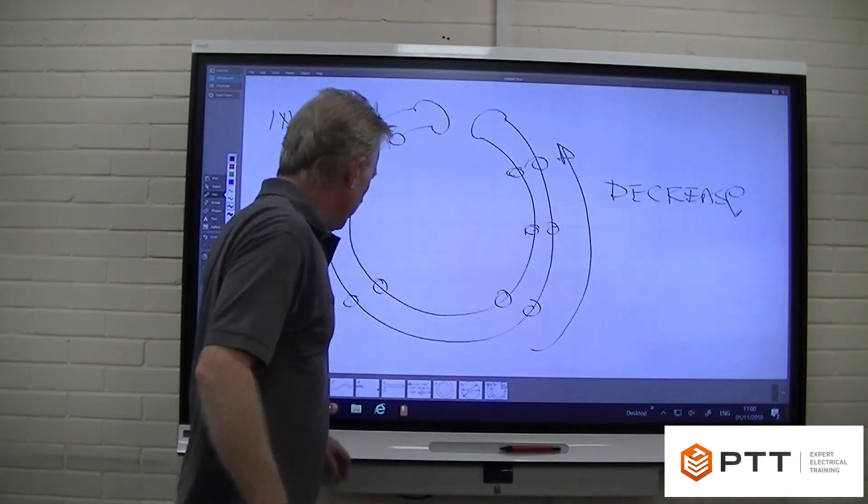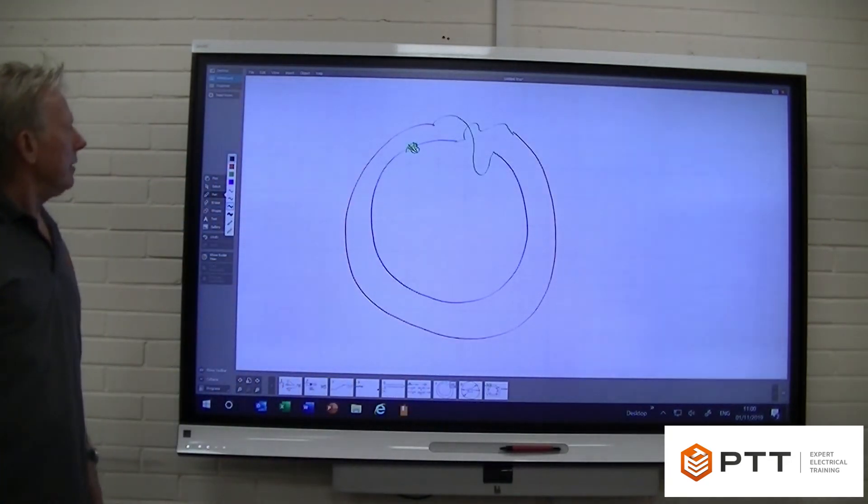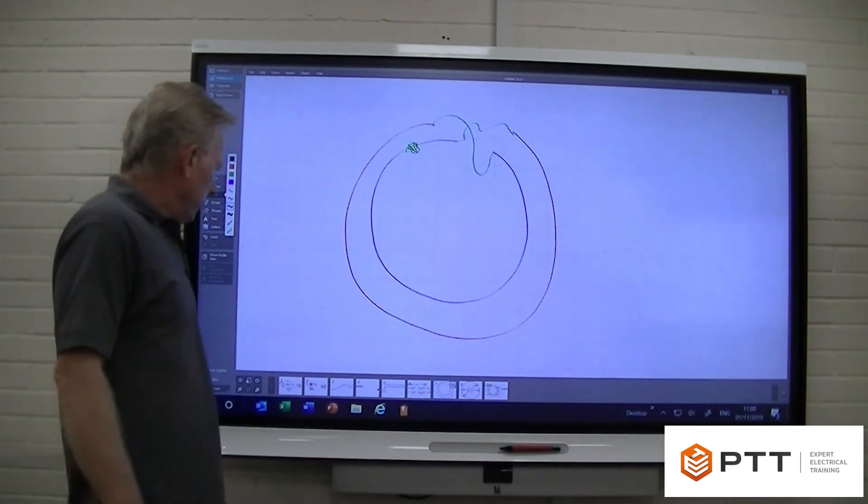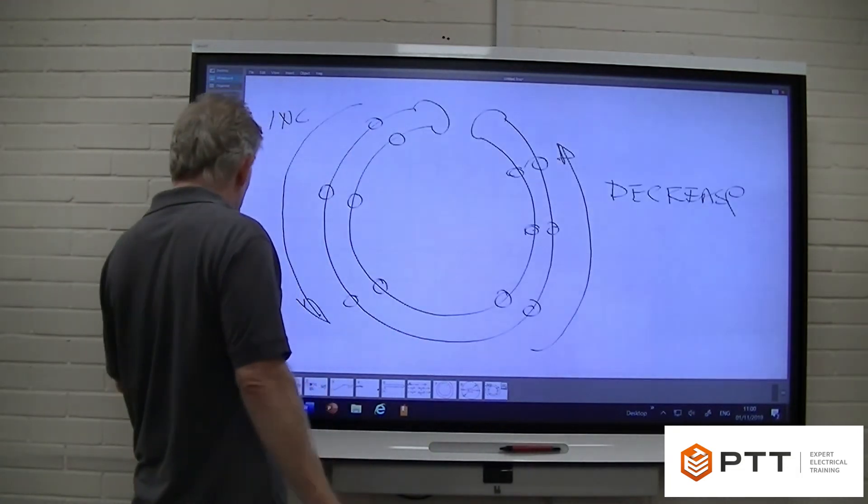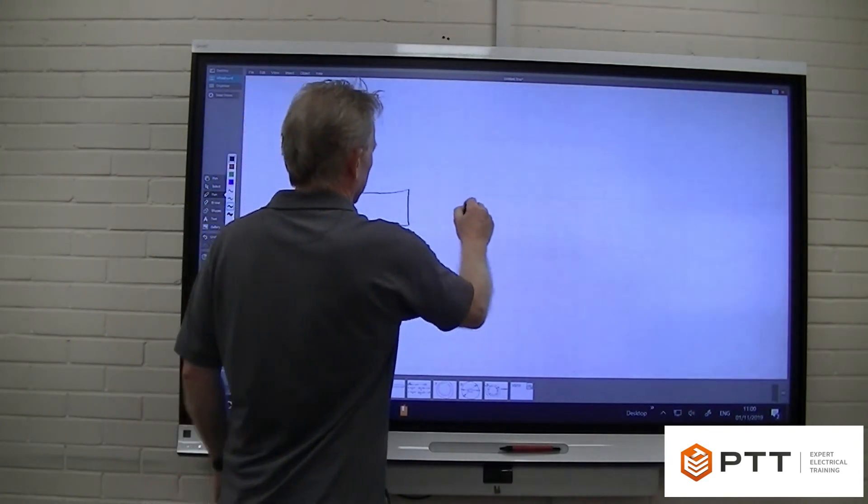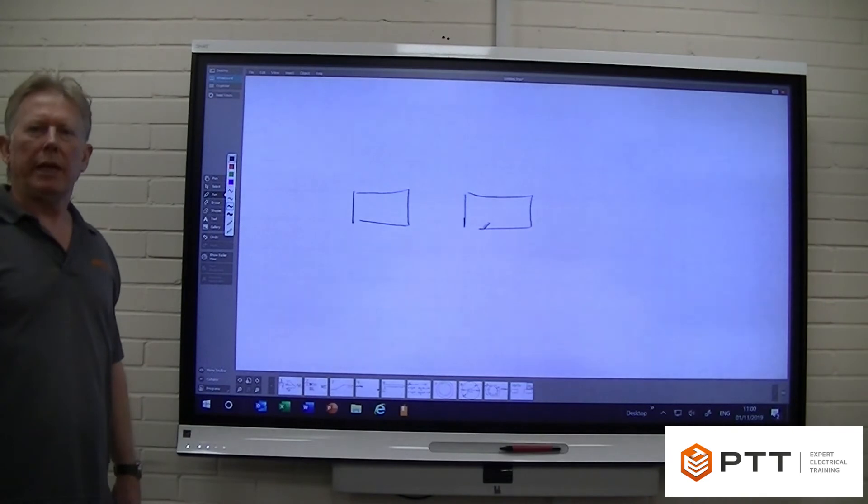So as you can see, it's very important to make sure we get these cross connections done correctly. Once we've done the cross connections, it's simply a case of going to each socket on the ring and measuring our target figure.